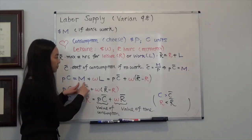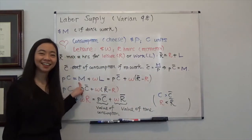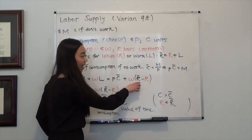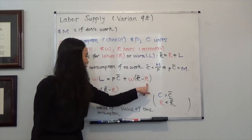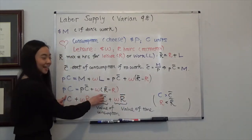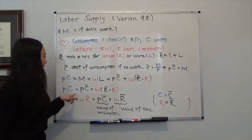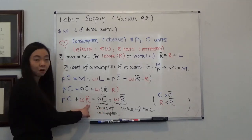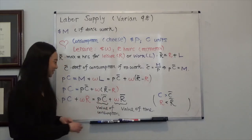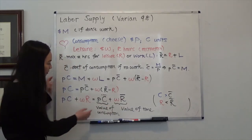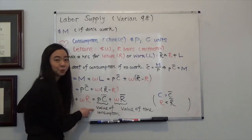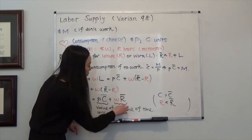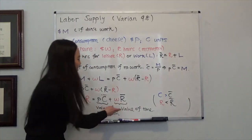Notice that I can rewrite M as P times C bar, and I can rewrite L — the hours I spend on work — as the total number of hours I have minus the hours I spend on leisure. With some algebraic manipulation, I get the final equation: P times C plus W times R equals P times C bar plus W times R bar. P times C bar is the value of consumption if I choose not to work, and W times R bar is the value of all the time I have — R bar total hours times my wage rate.